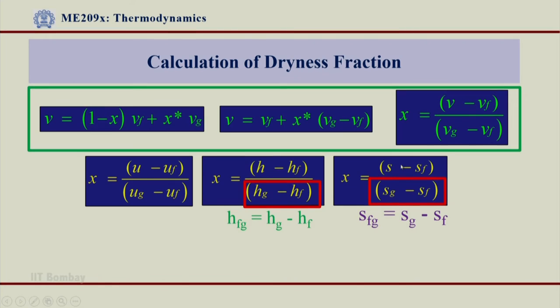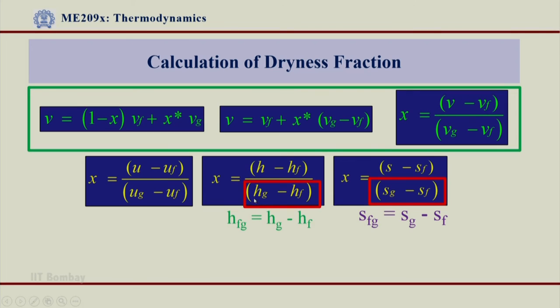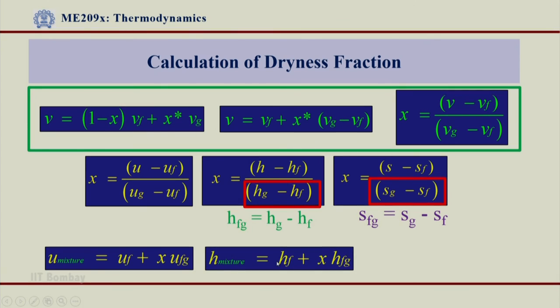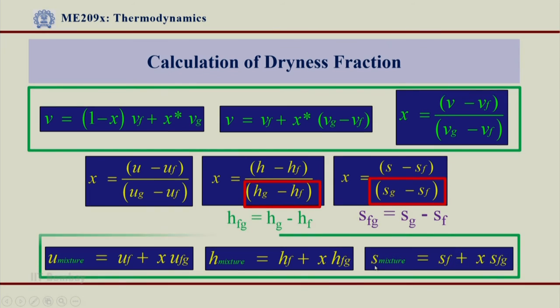The key point is: if I know the enthalpy or entropy of a two-phase mixture, I can immediately calculate the dryness fraction or the quality of the mixture. Once I know x at a given pressure and temperature, I can compute enthalpy, entropy, and thermal energy of a two-phase mixture, or the specific volume — all properties of any two-phase mixture can be obtained using this dryness fraction. The expressions are: thermal energy of mixture equals Uf plus x·Ufg; enthalpy equals Hf plus x·Hfg; and entropy equals Sf plus x·Sfg. These values — Sf, Sfg, Hf, Hfg, Uf, and Ufg — can all be obtained from the steam table. What I need to know is just the dryness fraction.